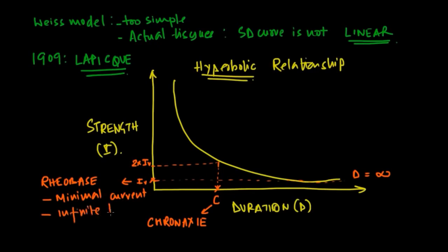So essentially, rheobase is minimal current of infinite duration required to stimulate, while chronaxie is the duration of stimulation required to stimulate a nerve at twice the rheobase current.